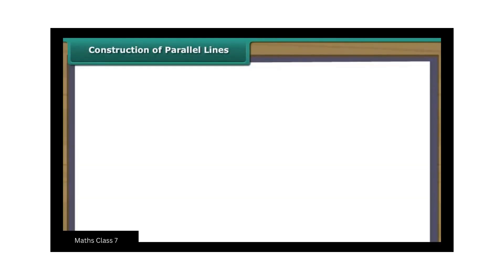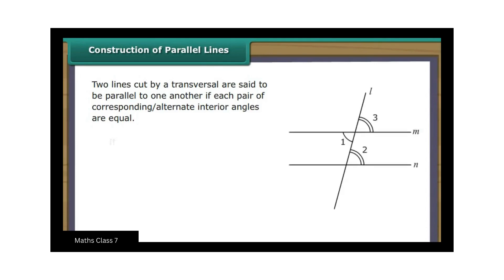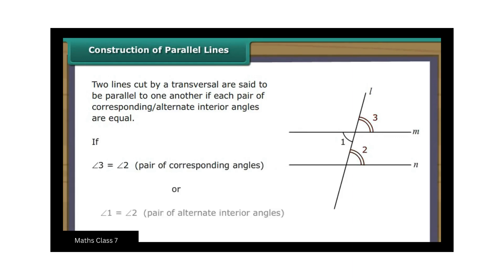Construction of Parallel Lines. Two lines cut by a transversal are said to be parallel to one another if each pair of corresponding alternate interior angles are equal. In the figure, if angle 3 is equal to angle 2 or angle 1 is equal to angle 2, line M is said to be parallel to N. We use a ruler and a compass to construct parallel lines.